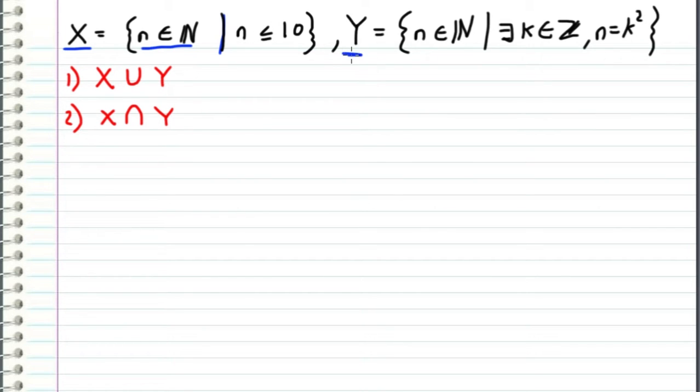And then we also have this set Y, which contains non-negative integers such that there exists an integer k where n is equal to k squared. So basically, Y contains the squares of integers. The person who sent in this problem wants us to find X union Y and X intersect Y.